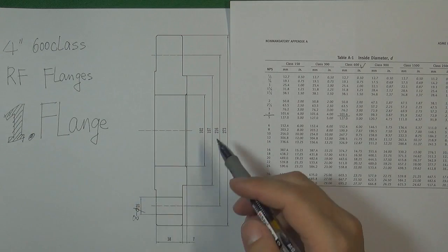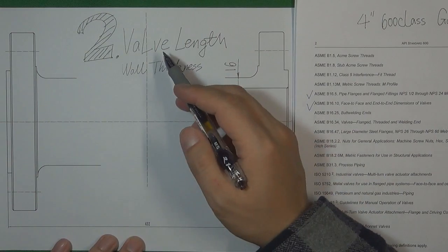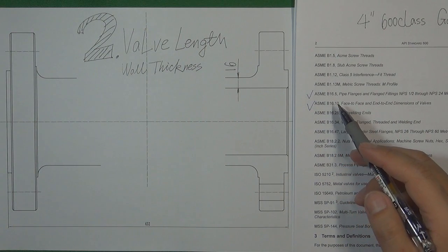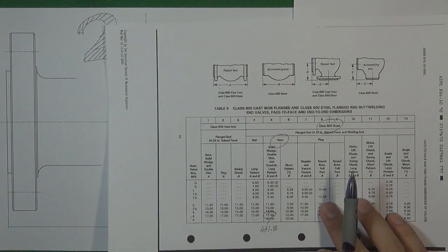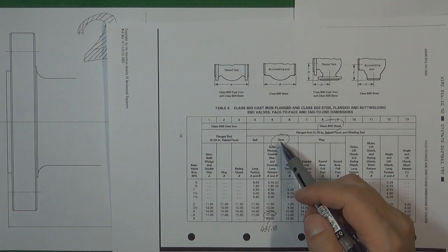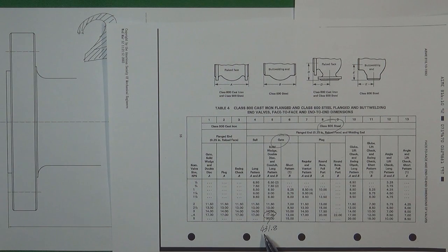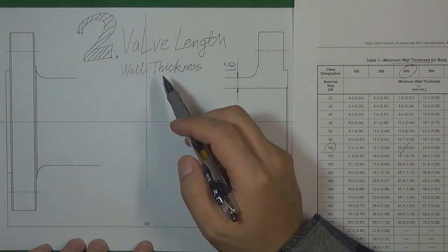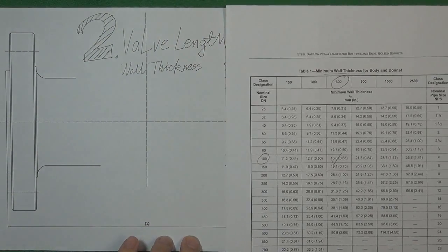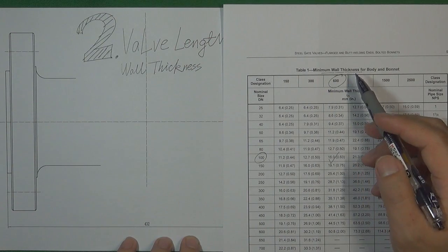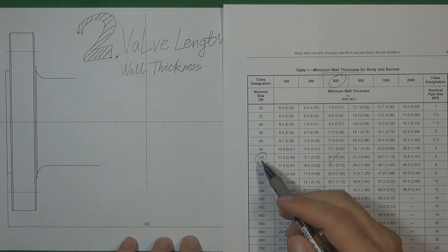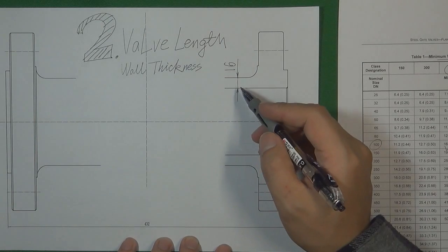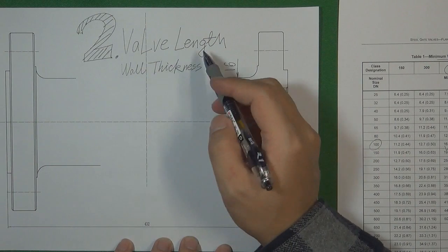That is the first step for the flange. Step 2 is for the valve length and the valve wall thickness. According to API 600, the valve length is determined by the standard ASME B16.10. For a 600 pressure class gate valve, size 4-inch, the valve length is approximately 432 mm. So we're going to use 432 mm to design the valve length. The valve wall thickness comes from API 600, which has a table for minimum wall thickness. For 600 pressure class, 4-inch gate valve, the valve wall thickness is 16 mm. So we're going to use 16 mm to design the valve wall thickness.